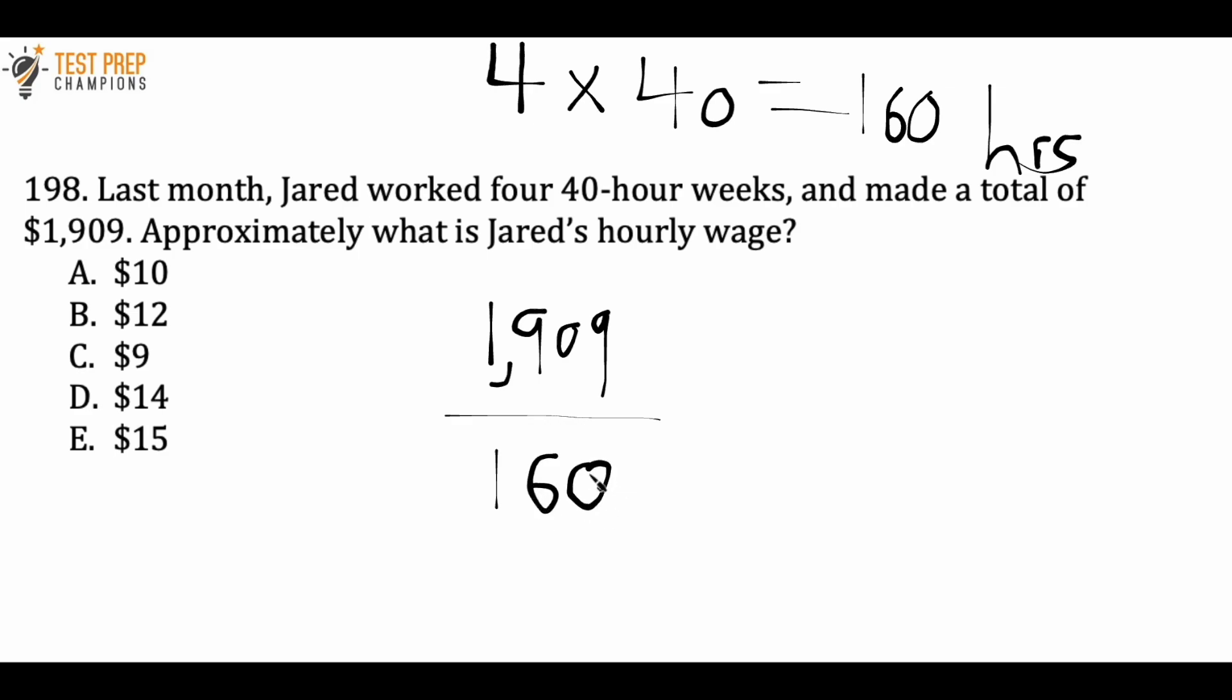If we do that, we're going to get a number that is just a little bit less than 12, but we are asked for approximately what is Jared's hourly wage. So the number that you get in your calculator, since it's so close to 12, we can say that 12 is approximately Jared's hourly wage.